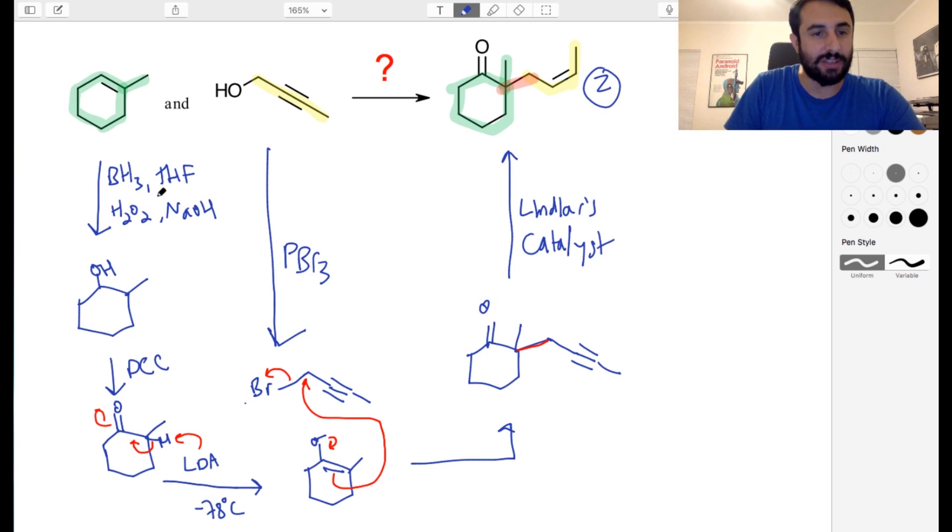Let's just review. We did some hydroboration oxidation to get this hydroxyl right there. PCC, ketone. LDA got us the enolate. In the meanwhile, PBr3 replaced the hydroxyl with the bromine, and then the enolate attack there to give us this where we were almost done. Then we just did Lindlar's catalyst to go from the alkyne to the Z alkene. So that's today's synthesis challenge.